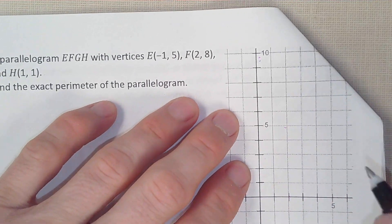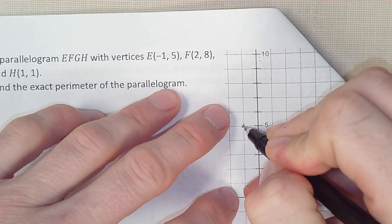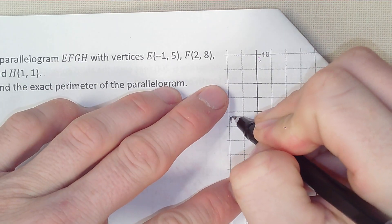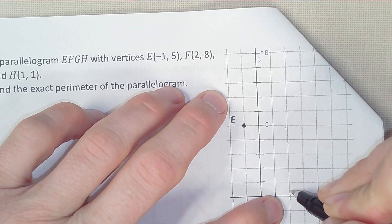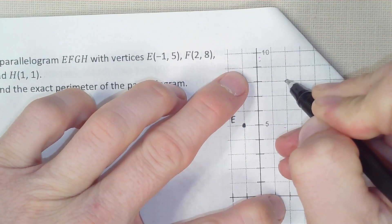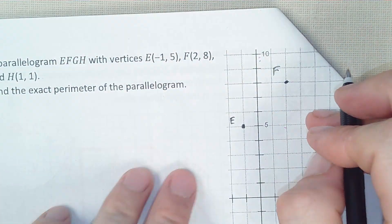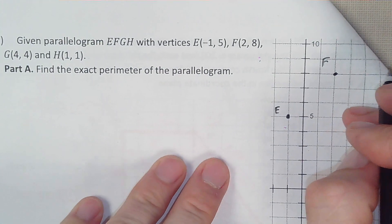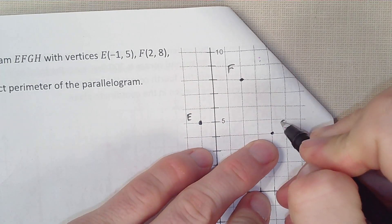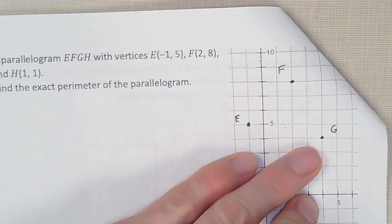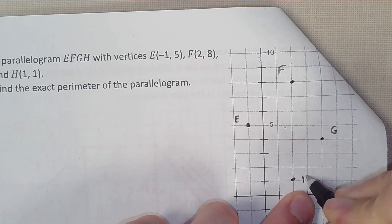E is negative 1 and 5, so negative 1 and 5 is E. F is 2 and 8. G is 4 and 4. And H is 1 and 1.